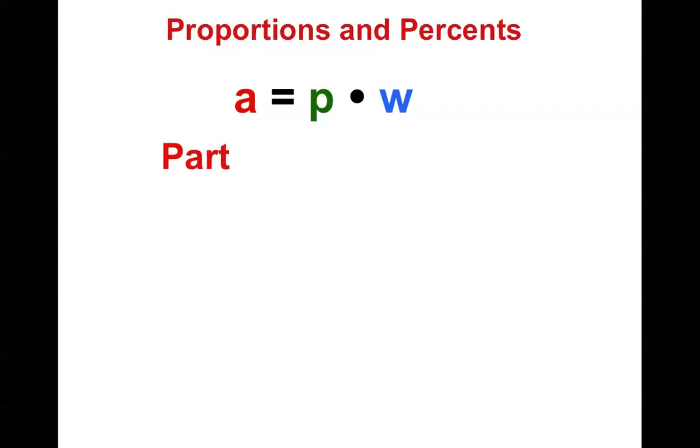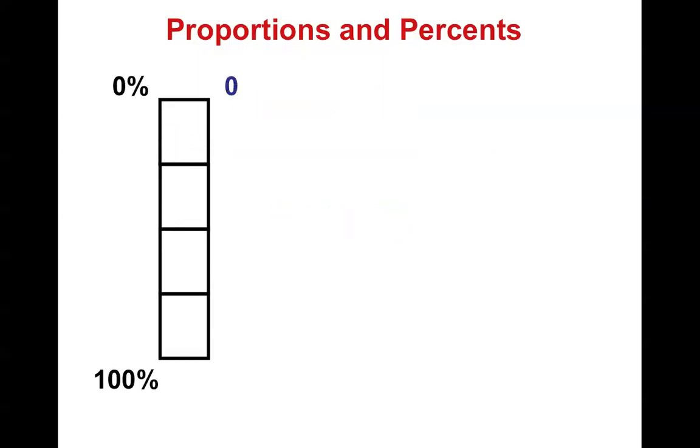Where a is the part, p is the percent, and w is the whole. So we used this diagram last time to sort of help us figure out which was the part, which was the whole.